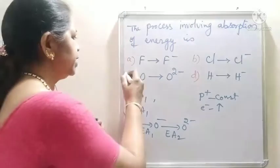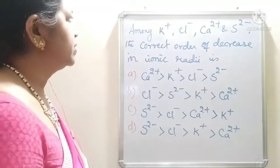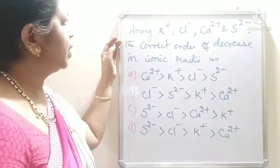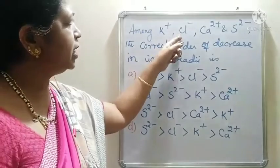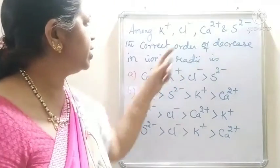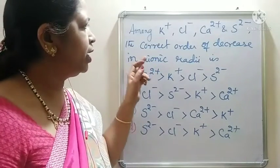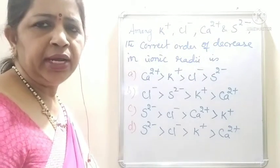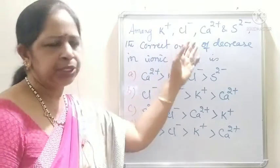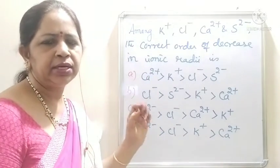Option C is the correct answer for this question. Next question is based on ionic radii. Among K⁺, Cl⁻, Ca²⁺, and S²⁻ ions, what is the correct order of decrease in ionic radii? How are these four species arranged in decreasing order of their ionic radii?